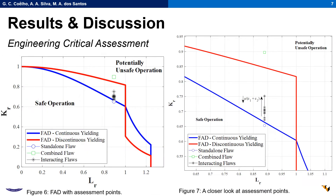Considering the engineering critical assessment using the failure assessment diagram methodology, it can be seen that the combined flaw would not be safe for operation while all the interacting cases would be, which indicates that there would be still some safe operational life for those when compared to the combined flaw.